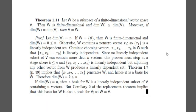Let's see this theorem: let W be a subspace of a finite dimensional vector space V. Then W is finite dimensional and dim(W) ≤ dim(V). Moreover, if dim(W) equals dim(V), then V equals W. Let dim(V) equal n. If W equals {0}, then dim(W) equals 0, which is less than or equal to n. Otherwise, W contains a nonzero vector x1, so {x1} is linearly independent. Continue choosing vectors x2, x3, ..., xk in W such that {x1, x2, ..., xk} remains linearly independent. Since no linearly independent subset of V can have more than n vectors, this process must stop at some stage k ≤ n.